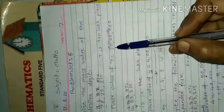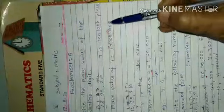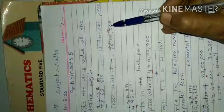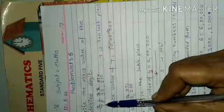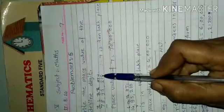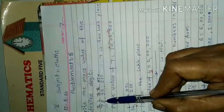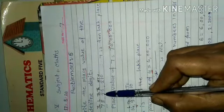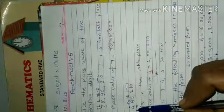Place value of 7 is equal to 70 lakh, is equal to 70 lakh. Count the places: unit, 10, 100, 1000, 10,000, lakh, 10 lakh. 10 lakh means how many zeros do we add? 1, 2, 3, 4, 5, 6 zeros. Now let's see the next question.